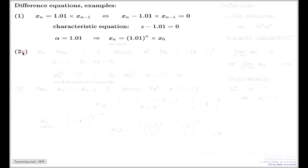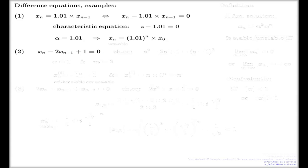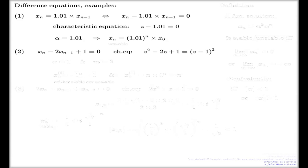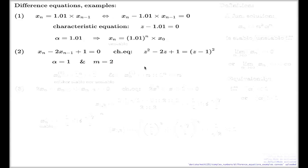The second example we had was this one. For that example, we guessed the roots before, but now we're going to do the complete analysis. Here it is — the characteristic equation for this. Here it is. Here's my characteristic equation, and we all know it's a perfect square, which means we have only one alpha: alpha equal to one. But this time, the multiplicity of this alpha is two.